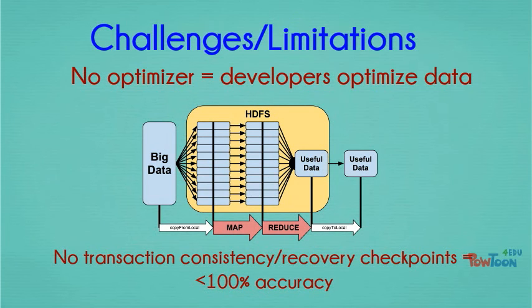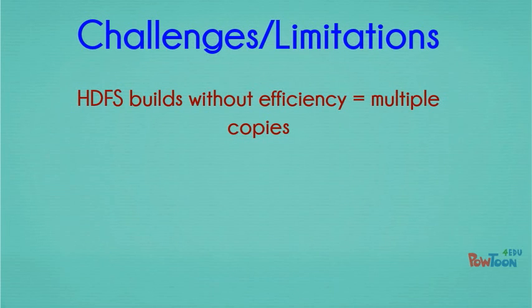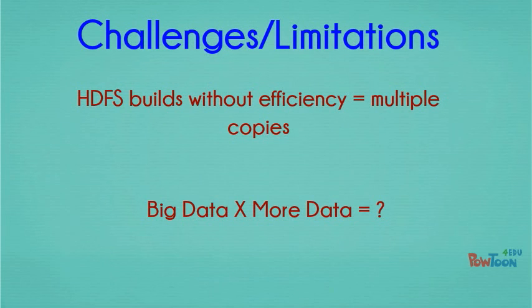This means that the answer you get from a Hadoop cluster may or may not be 100% accurate. Because HDFS was built without the notion of efficiency, it results in multiple copies of the data being created. At a minimum, there are generally three copies of the data, and because of the need for data locality and maintaining performance, we very often see six copies of the data required — and that is for data that is already big by definition.